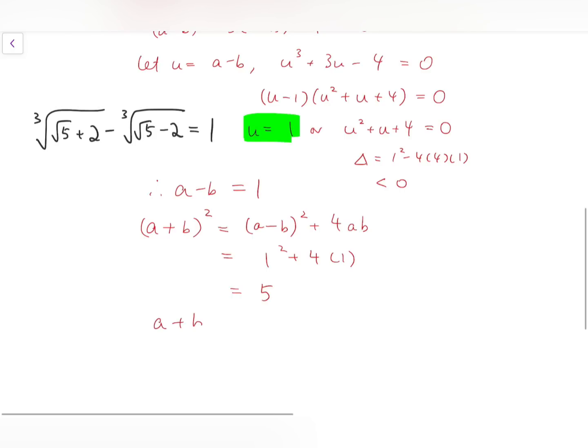And since we know that this expression is positive, because both cube roots are positive, we know a plus b equals root 5. And this is our final answer.